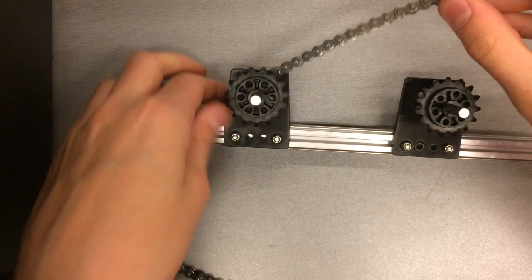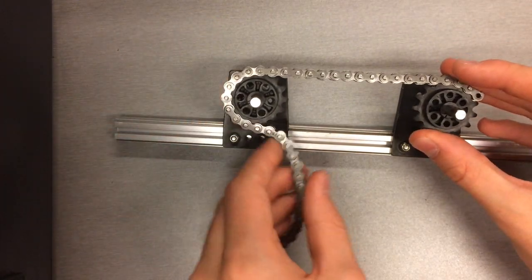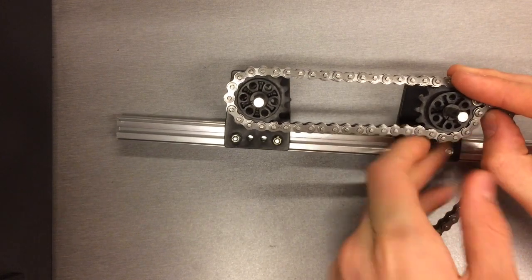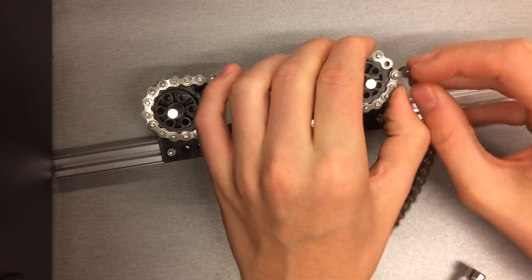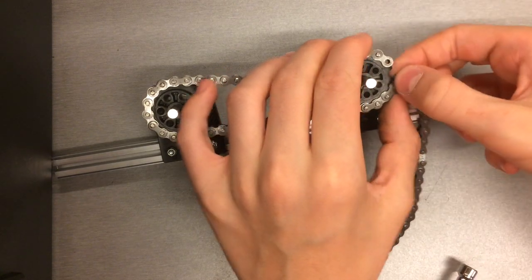Next, we will cut the length of chain that we need to chain these two sprockets together. Wrap the chain around the sprockets ending where there is an internal link on both sides that are next to each other.